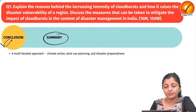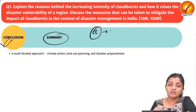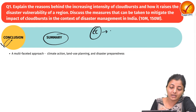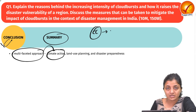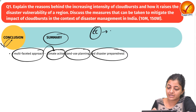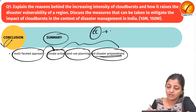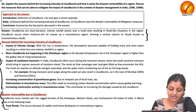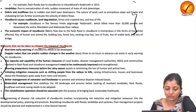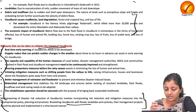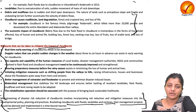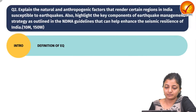In conclusion, cloudburst mitigation requires a multi-faceted approach involving suitable climate actions, land use planning, and proper disaster preparedness. The model answer covers the definition of cloudburst, reasons for increasing intensity, disaster vulnerability, and mitigation measures, concluding that cloudburst should be managed alongside floods, landslides, and cyclones in a time-bound, planned manner. This completes the first question.